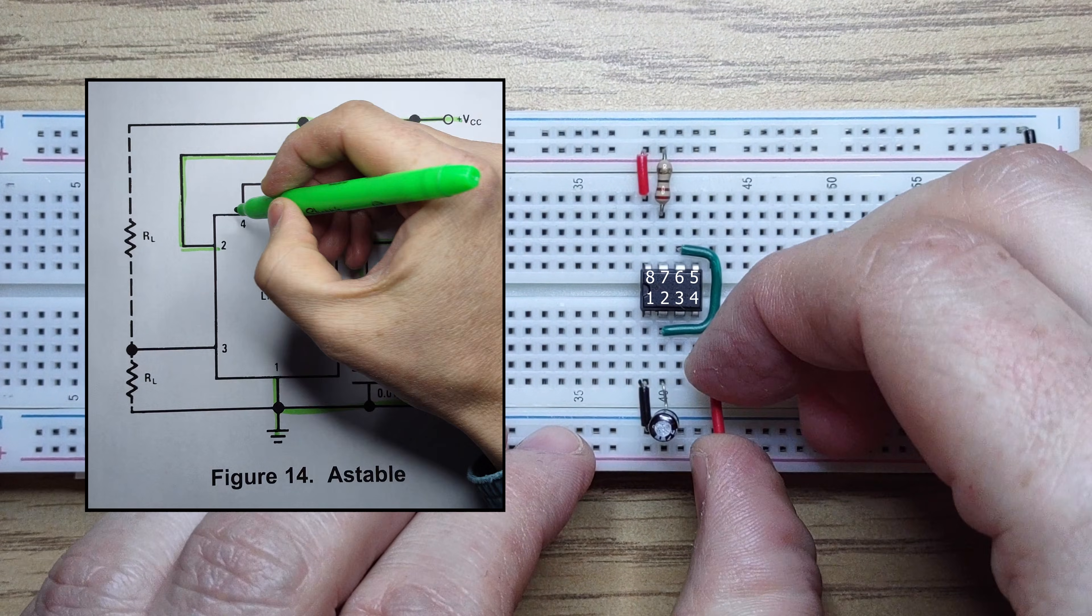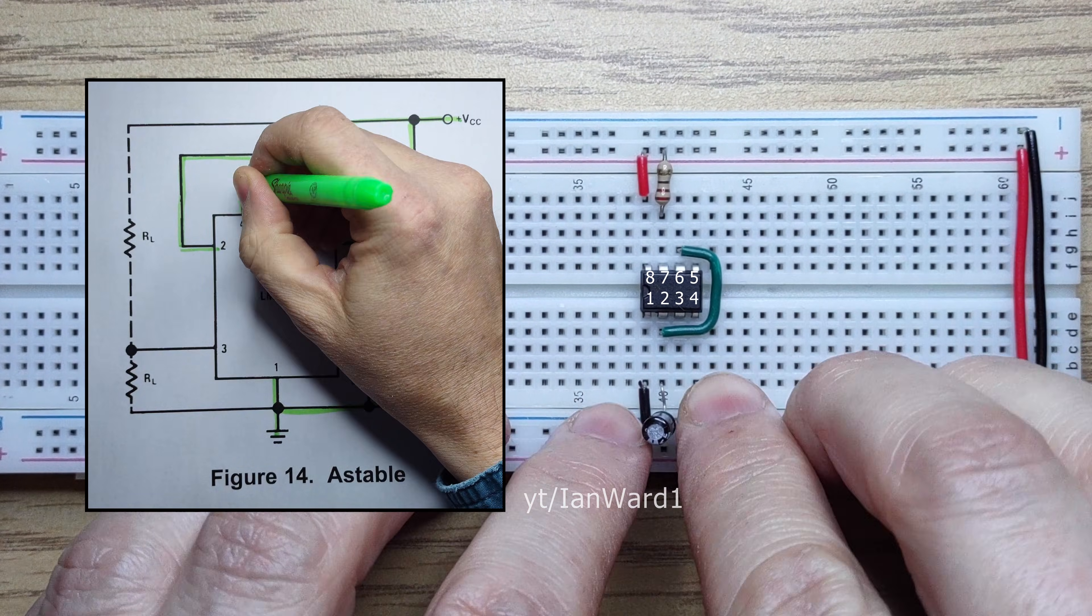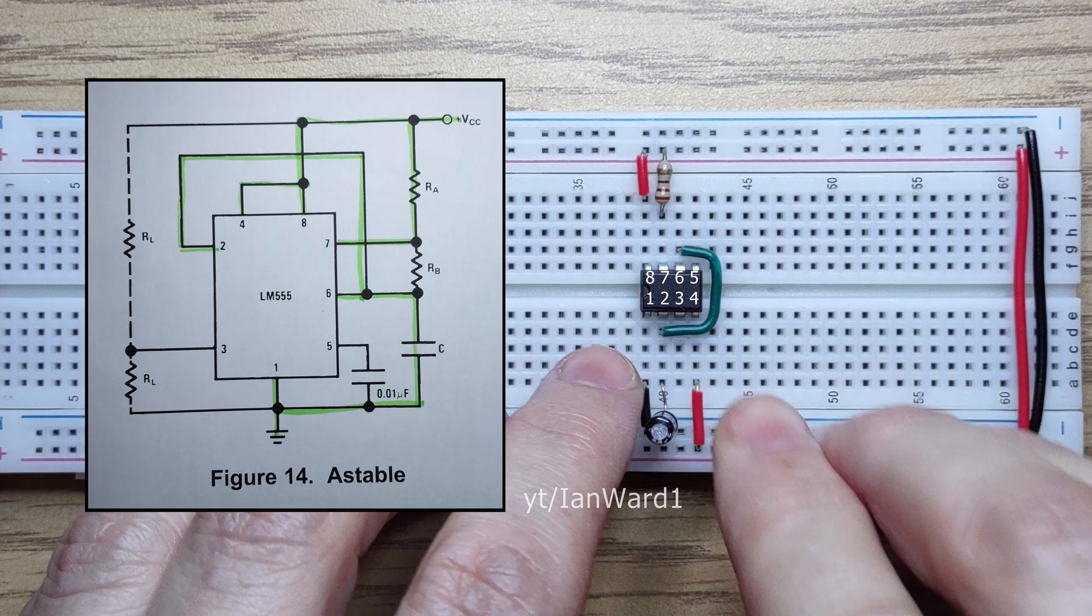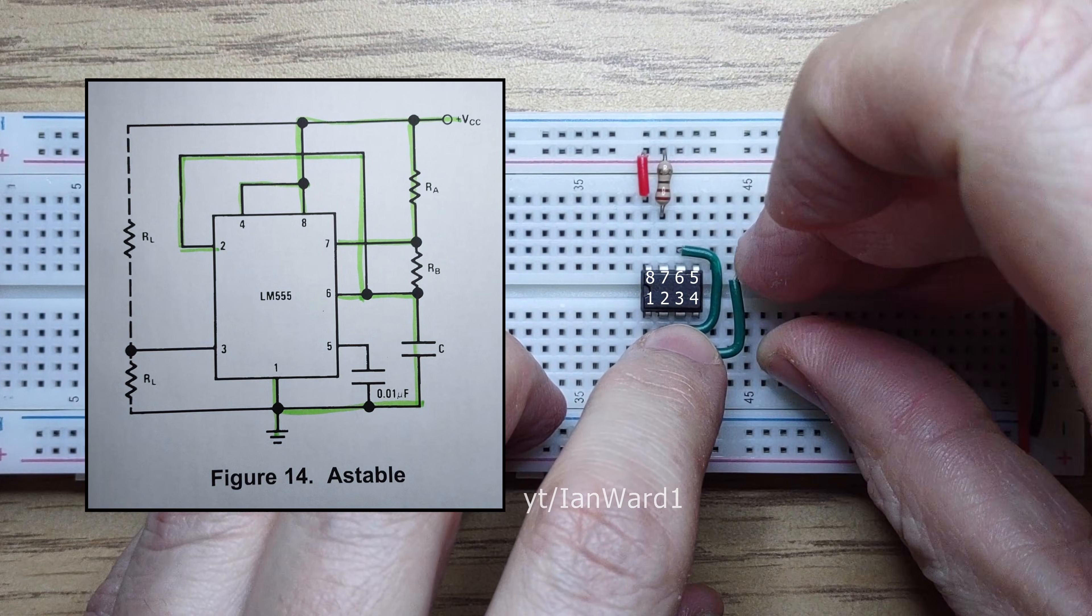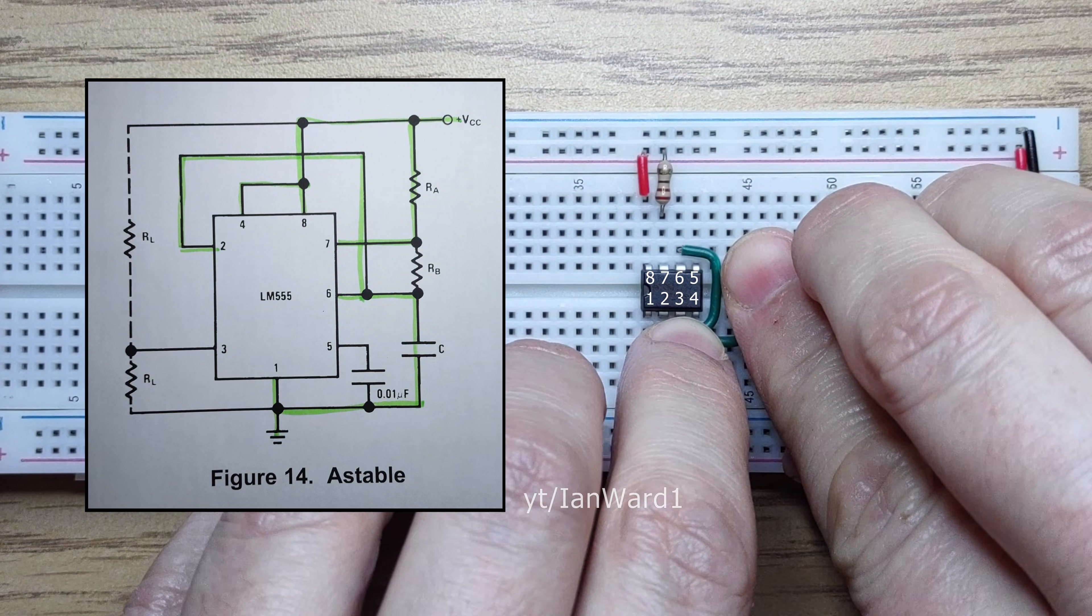Pin 4 is the enable pin. We'll connect it to VCC for always enabled. We'll connect an LED to the output now, with a 220 ohm current limiting resistor.